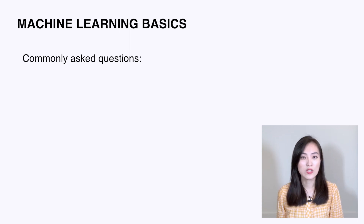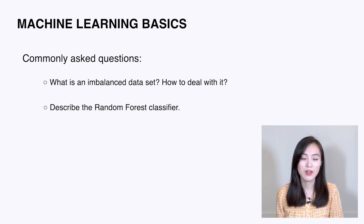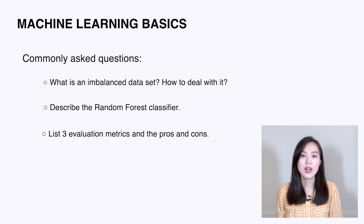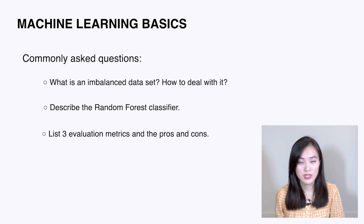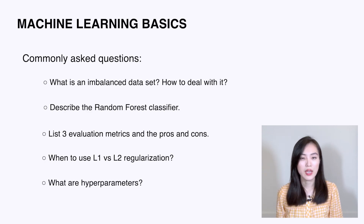Here are some other commonly asked questions in this category: What is an imbalanced dataset and how do you deal with it? Briefly describe the random forest classifier — how does it work, and what are the pros and cons? List three evaluation metrics and describe their advantages and disadvantages. When do we use L1 regularization compared to L2? What are hyperparameters and how do you tune them?